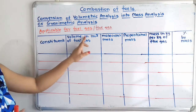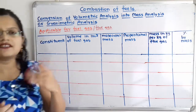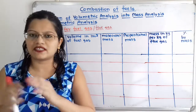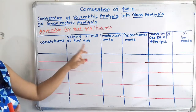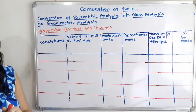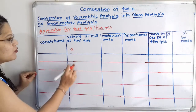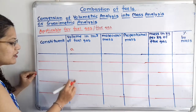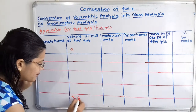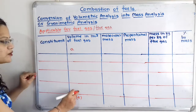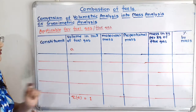The second column is volume in 1 metre cube of fuel gas, which we will call letter A. For each constituent the percentage is divided by 100 to give its volume fraction. When we add all these volumes for each constituent, the summation of A should be equal to 1. We verify this before moving to the next column.